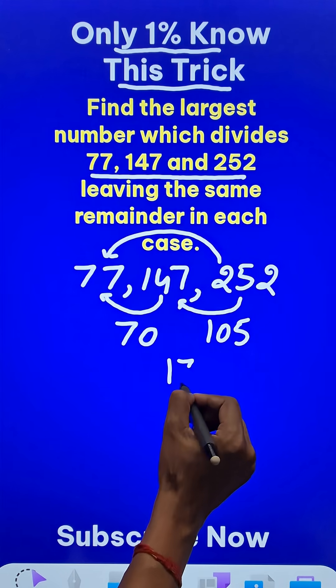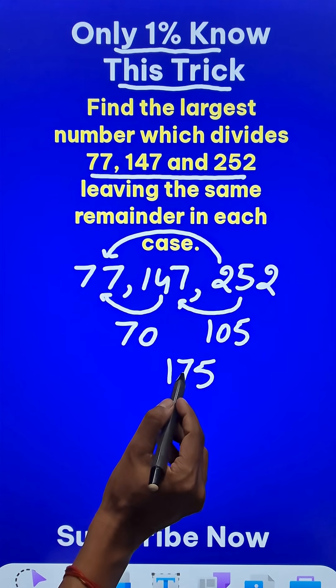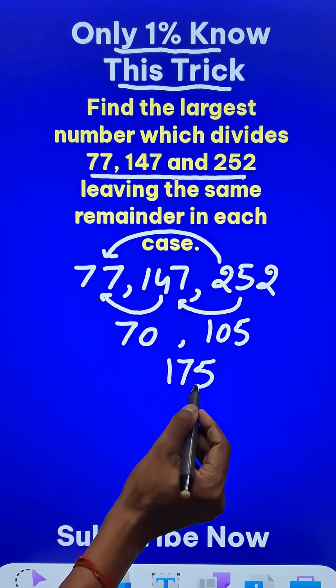So the three numbers are 70, 105, and 175. How did we find these three numbers?